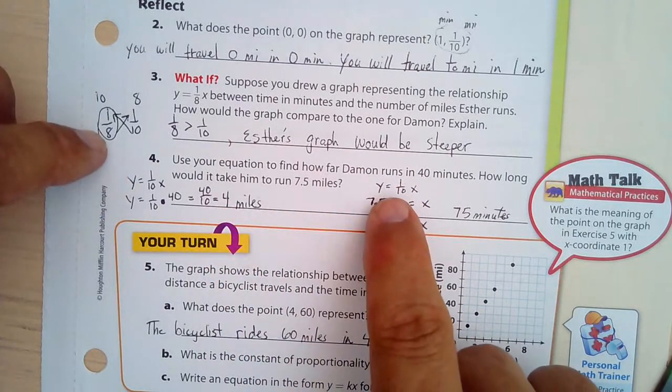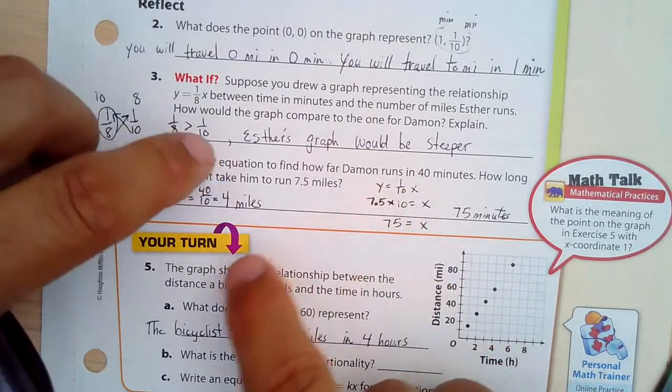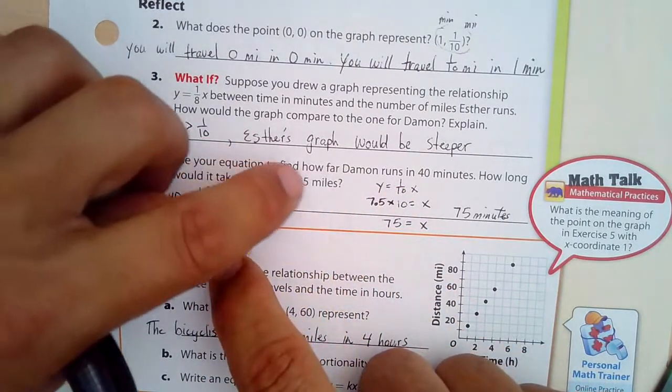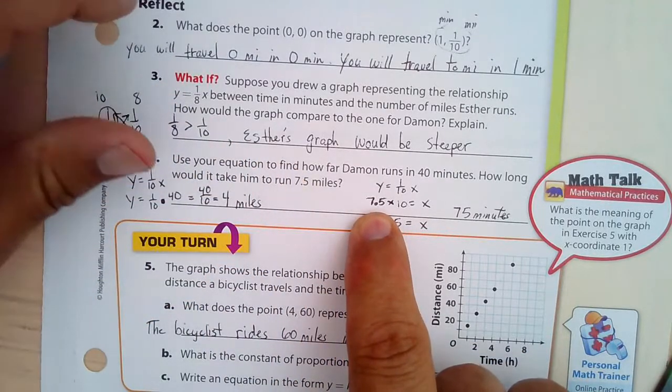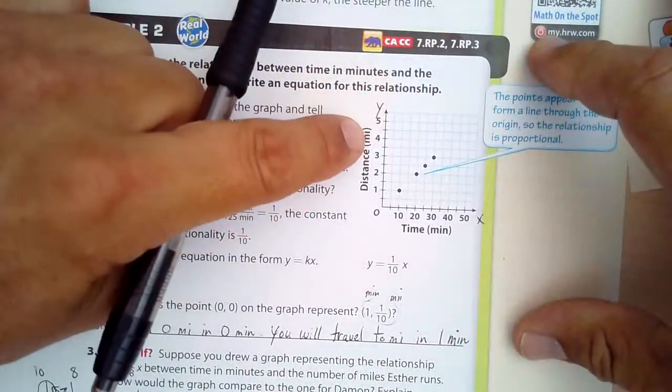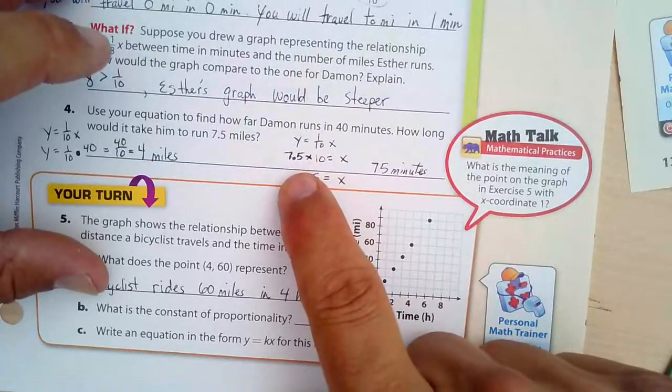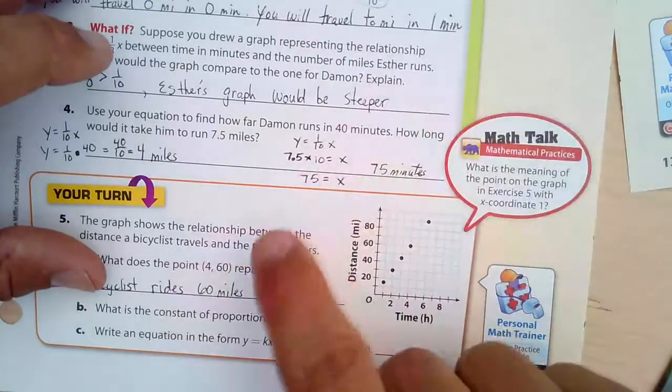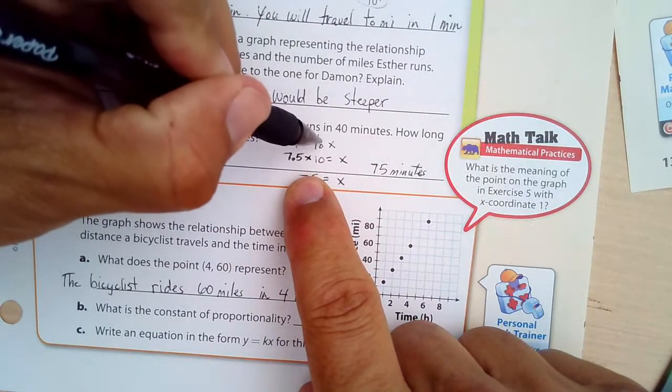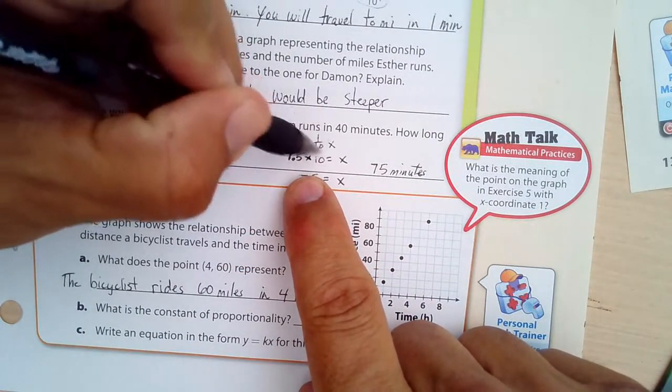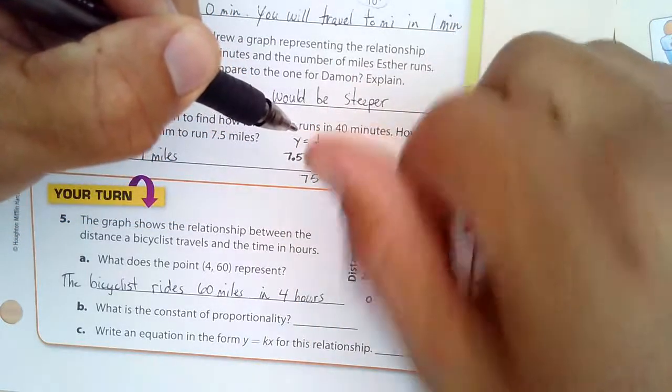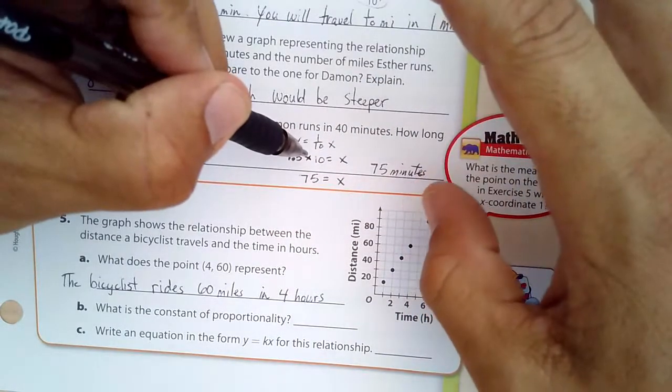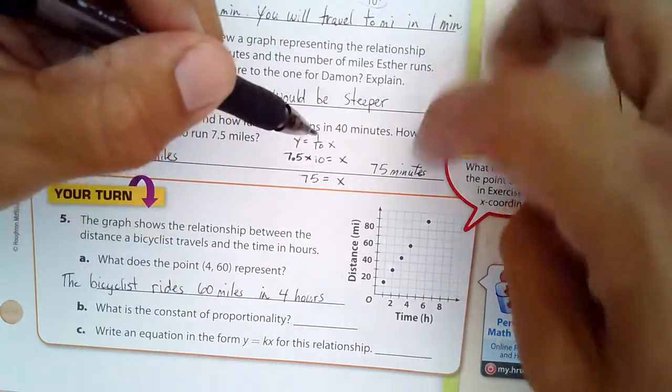Now I'll use that same equation here, but now we're finding how much time it would take him to run 7.5 miles. The y is the distance, and the x is the time in minutes. 7.5 miles times 10. I'm multiplying by 10 because this is times 1 tenth. And if you bring it to the other side of the equal sign, you have to use the reciprocal. 7.5 times 10 is 75. So it takes you 75 minutes.